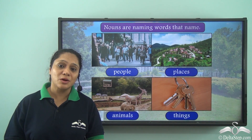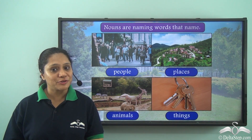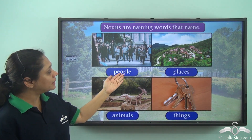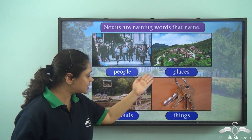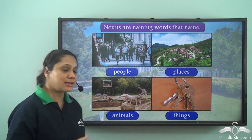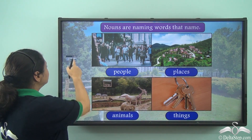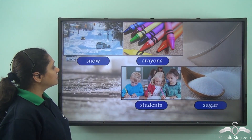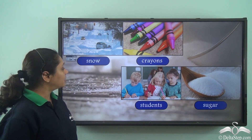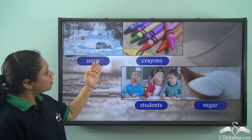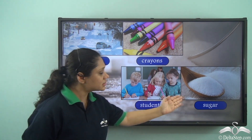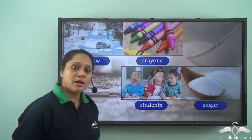We know that nouns are naming words that name people, places, animals and things. Now let us look at the words here: snow, crayons, students, sugar.